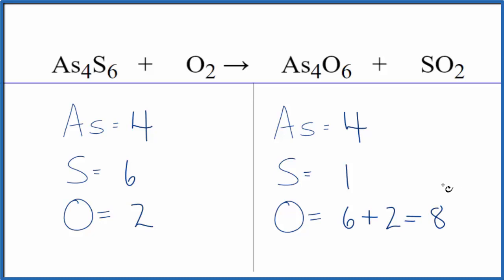Okay, probably easiest to try to fix the sulfur first. We have six here and one here, so we have to put a six in front of the SO2. One times six, that would balance the sulfur atoms, but now...